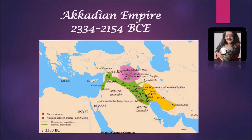Before I show you the Akkadian art forms, let's look at the geography of Mesopotamia once again. The other day I showed you the cities of Ur, Nippur, and Lagash. These were the major cities of ancient Mesopotamia, located in the southern part of modern Iraq on the coast of the Arabian Sea.